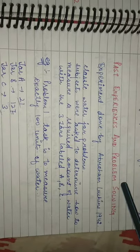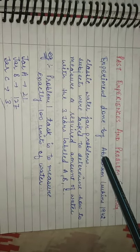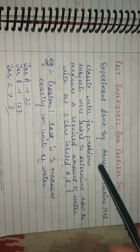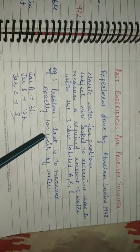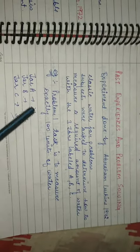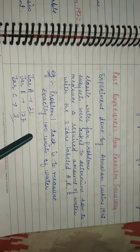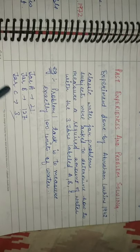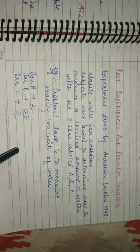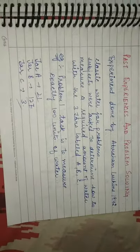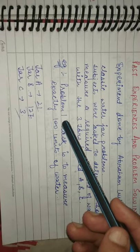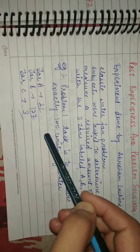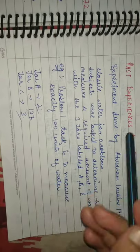अब past experience and problem solving. ये experiment Abraham Luchins ने 1942 में किया — ये classic water jar problem थी. इसमें measure करना था 100 units of water. Jar 1 contain 21 units, jar 2 contain 127 units, jar 3 contain 3 units. तो हमने क्या किया — B minus A twice minus C. तो हमारा result same होगा — 127 minus 21 minus twice of 3 = 100 units exact measure कर लिया.